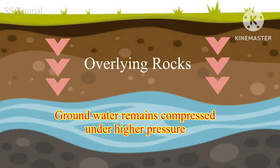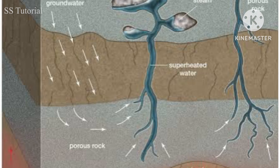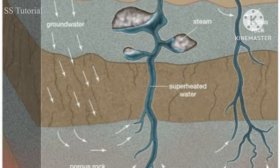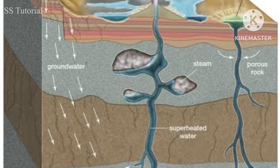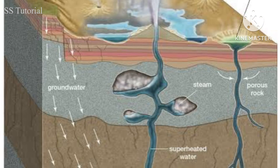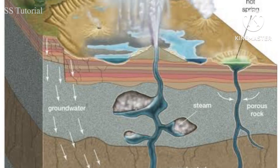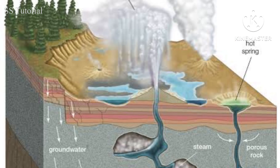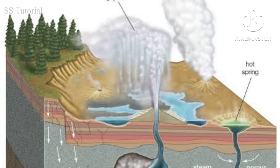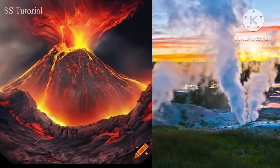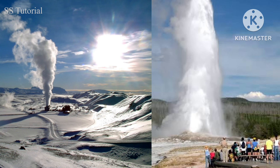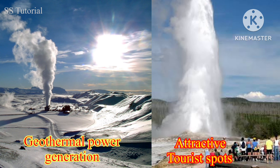When the pressure of the overlying rocks is released, that hot groundwater with a higher amount of steam is erupted at a greater velocity and at a greater height from an opening of the earth's surface. Geyser is very common near young volcanoes. Geyser is very important as it is used in various activities such as electricity generation, heating, and tourism.